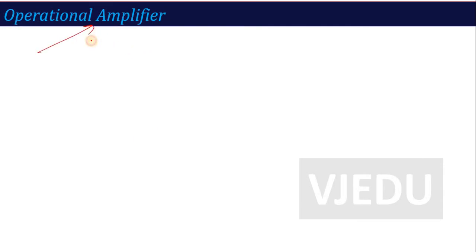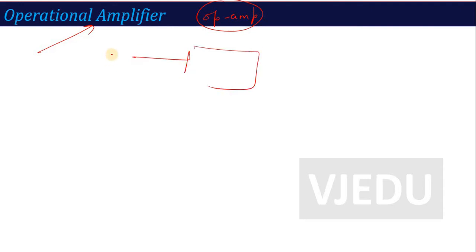Operational Amplifier — which we say in short, Op-Amp. The word 'amplifier' comes because we have already talked about BJT and FET. BJT is basically a current amplifier, FET is basically a voltage amplifier. An amplifier is a device where you apply something on the input and the output of that part increases. If current increases, that is a current amplifier; if voltage increases, that is a voltage amplifier. So amplifier means to increase the input signal.